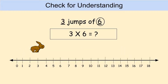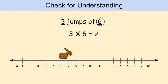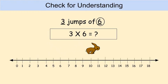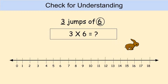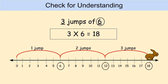Let's play back the video to show the jumps that Cinnamon made. Notice how Cinnamon starts on zero and jumps to six, then jumps six more to land on twelve, and six more to land on eighteen. Here's what your number line should look like: three jumps of six. Three times six equals eighteen.